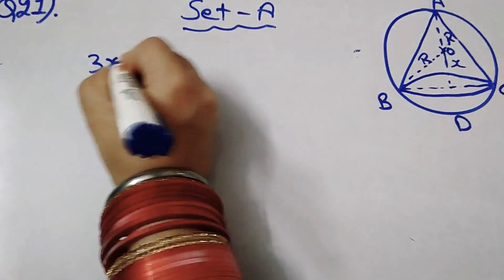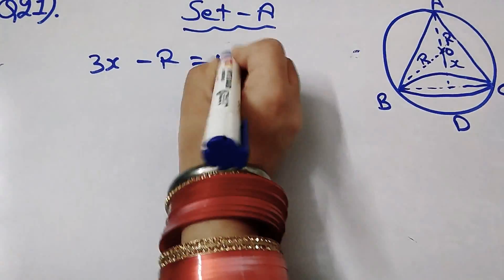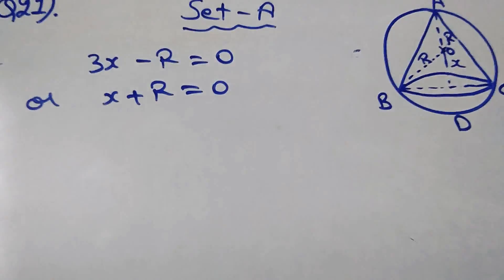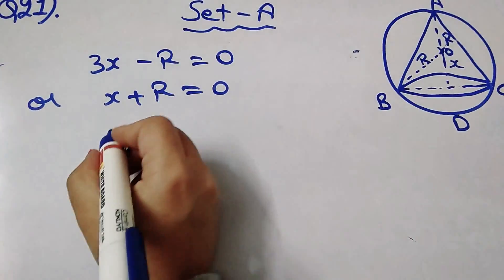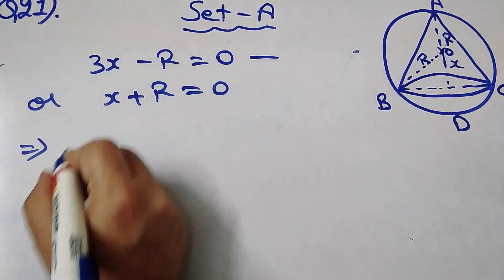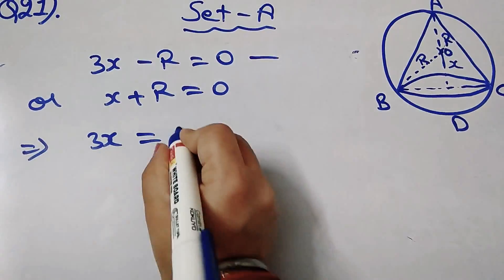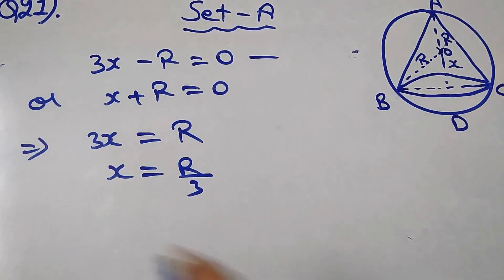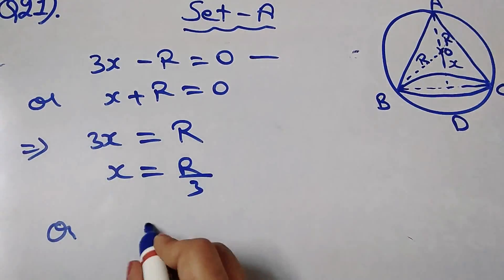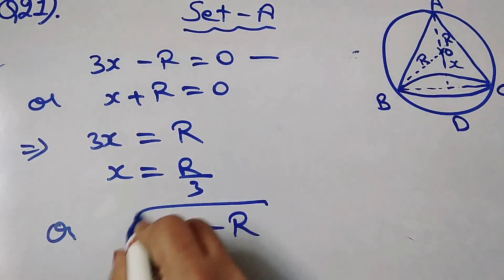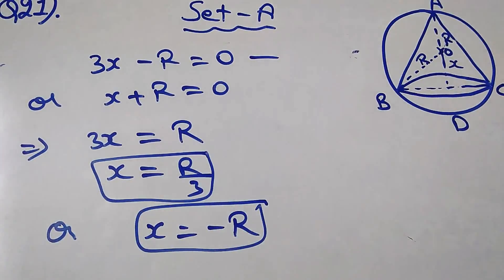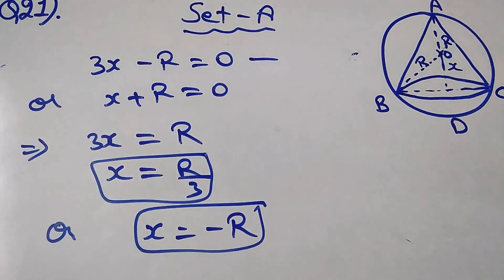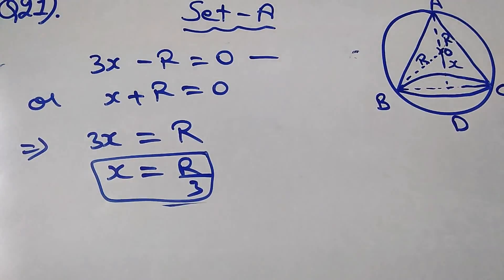From the factored form, either 3x − R = 0 or x + R = 0. Solving: x = R/3 or x = −R. Since x cannot be negative, we have x = R/3.